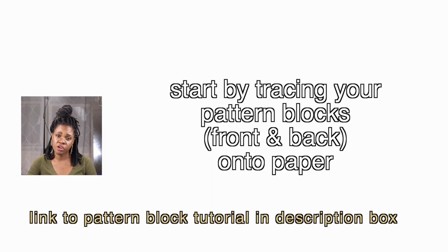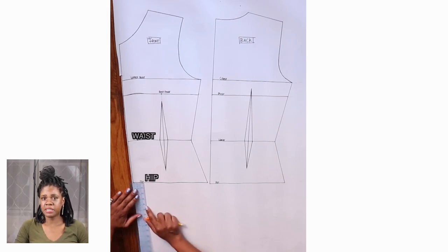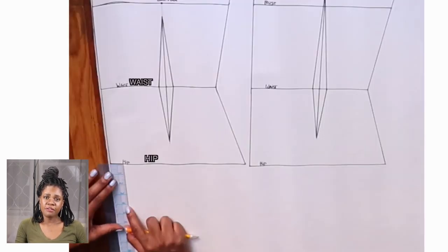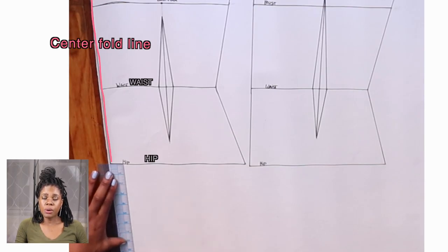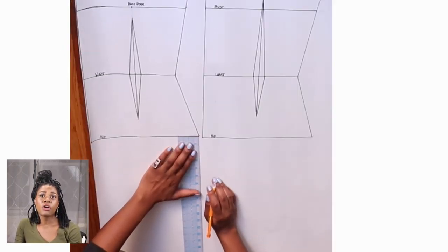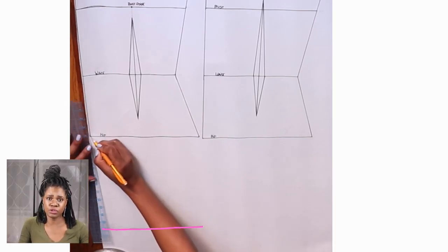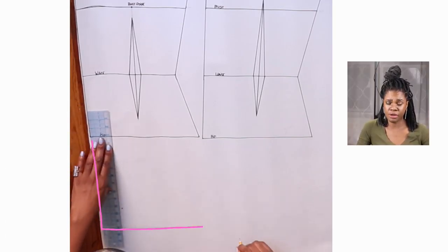You're going to record this measurement and transfer it to your pattern block. For example, if you decide that starting from your hip you want your dress to be 10 inches longer, you're going to go to your pattern block and from the hip line near the center fold line you're going to measure and mark 10 inches. From the seam you're also going to measure 10 inches down and make a mark.